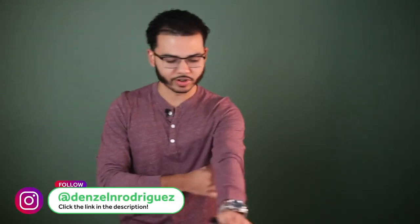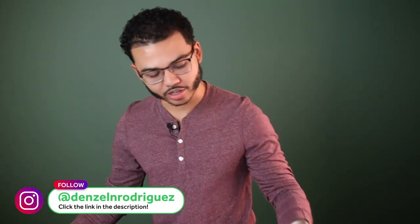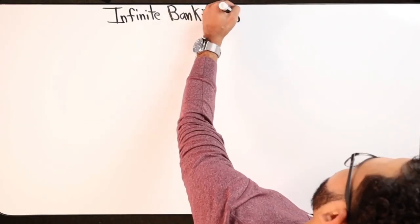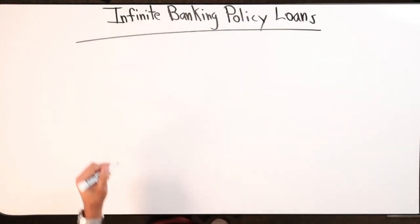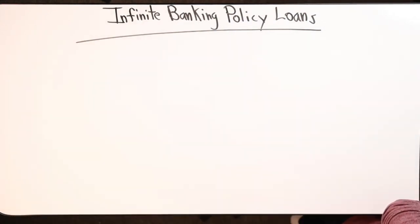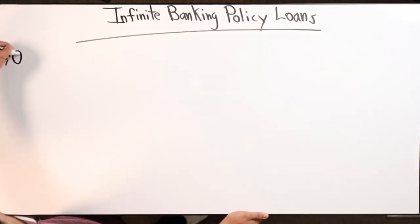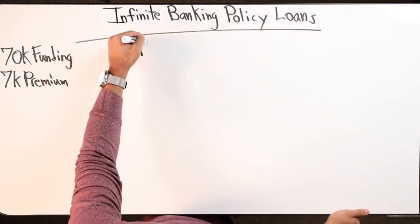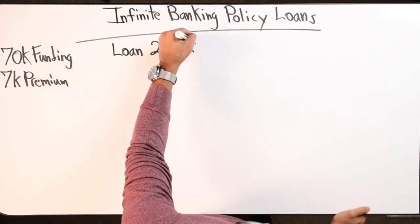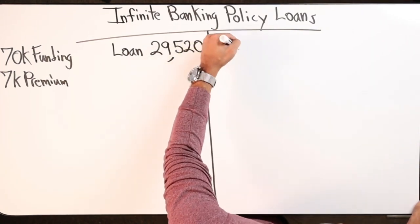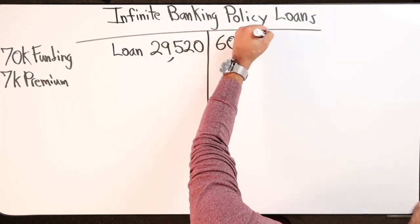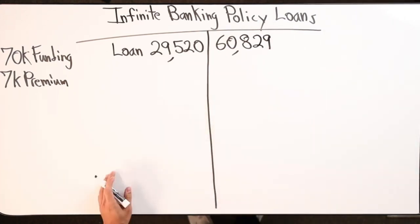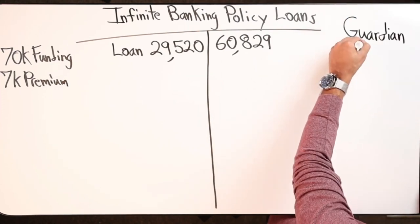There's something I want to cover again - talking about the infinite banking concept, so infinite banking policy loans. I'll use my own policy as an example. Let me open my Guardian account real quick and see where I'm at, give you guys the numbers again. So currently I have a loan against my policy for $29,520 and my cash value is $60,829.